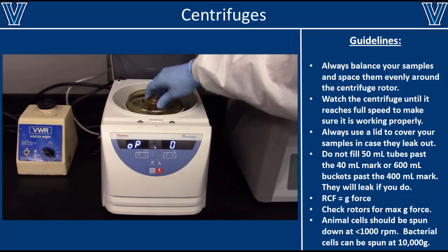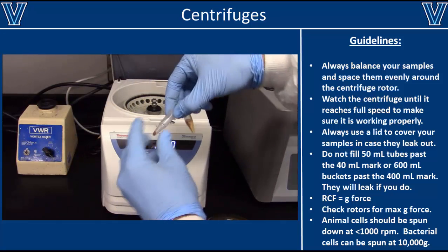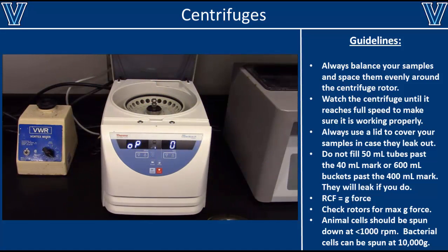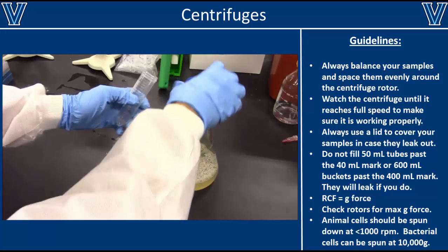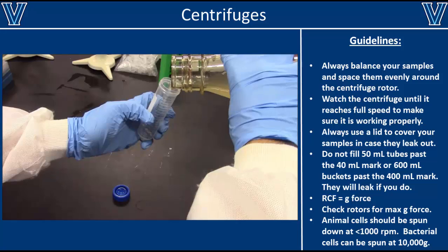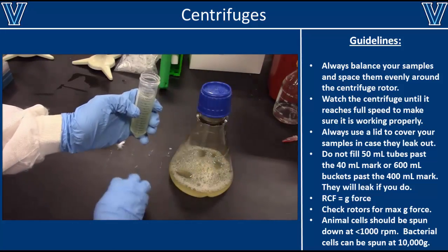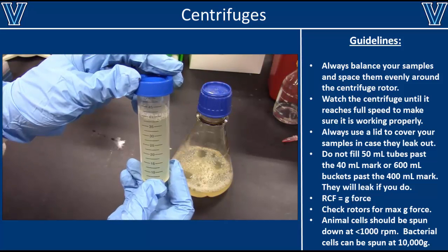Once the centrifuge has finished, wait for the rotor to completely stop spinning, then remove your samples. You should always check your samples to make sure the desired sedimentation has occurred. When you're done with the centrifuge, put the rotor lid back in place and close the main lid. Whenever you're using larger centrifuges that use buckets or 50 ml tubes, it is important that you only fill them up to about 80% of their maximum volume. For instance, here we're only filling up the 50 ml tube to 40 ml. This is because tubes and buckets do not have perfect seals. Therefore, when they're spun at high speeds, they can leak out if they're overfilled.